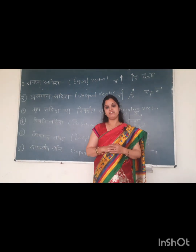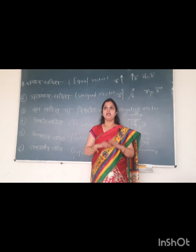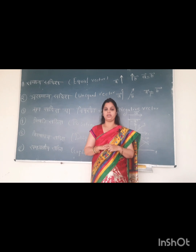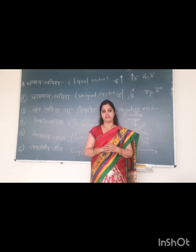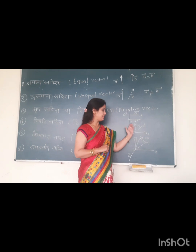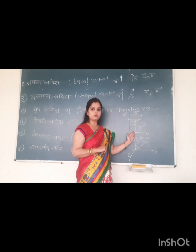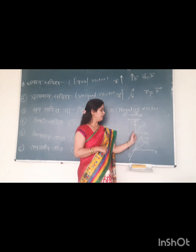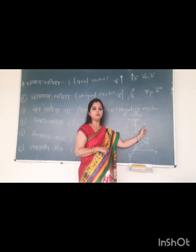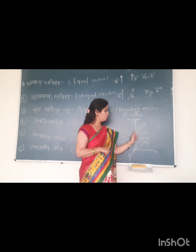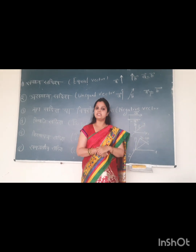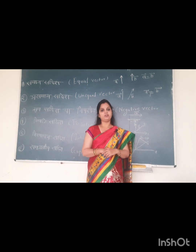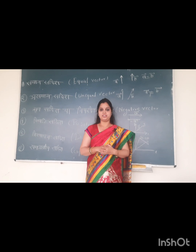The next vector is position vector (istititi sadish). In space, when we need to find the position of a particle, we always consider it with respect to the origin. Here we have the x, y, z axes, and O is the origin. If we need to find the position of a particle at point P, we draw a vector from the origin O to point P. This vector OP represents the position vector of the particle at point P, and it is denoted by the vector r.